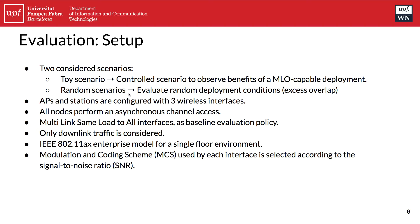Moving into the evaluation, first we explain the setup. We consider two different scenarios: a toy or control scenario to observe the benefits of a multi-link capable deployment against the traditional multi-band single-link deployment, and then we study the behavior of multi-link capable devices in random conditions. Access points and stations are configured with three wireless interfaces, and all nodes perform asynchronous channel access. The MLSA policy serves as our baseline evaluation policy, and only downlink traffic is considered.